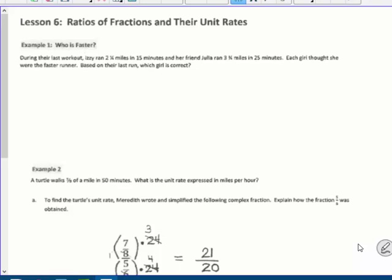During their last workout, Izzy ran 2.25 miles in 15 minutes, and her friend Julia ran 3.75 miles in 25 minutes. Each girl thought she were the faster runner. Based on their last run, which girl is correct? Well, this is relating distance, speed, and time. So I'm going to make my well-known triangle, distance equals speed times time, to help me figure this out.